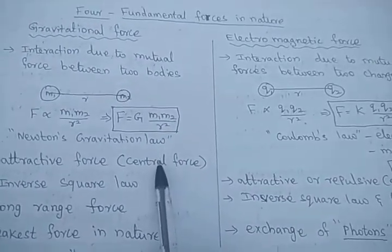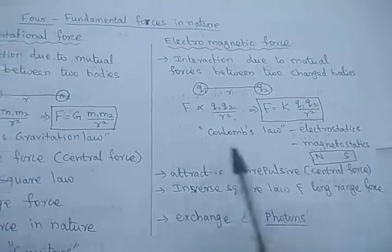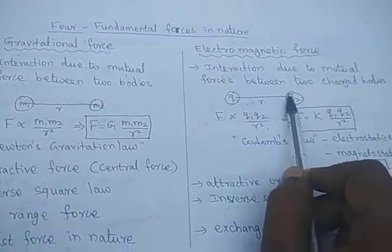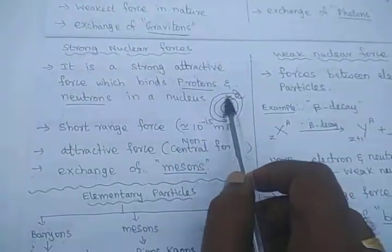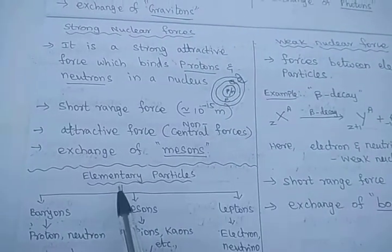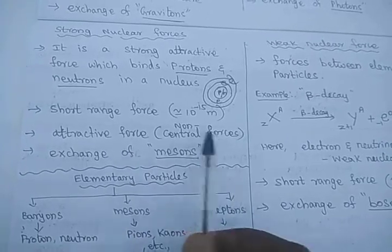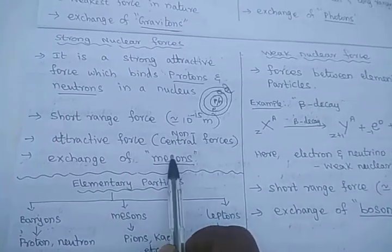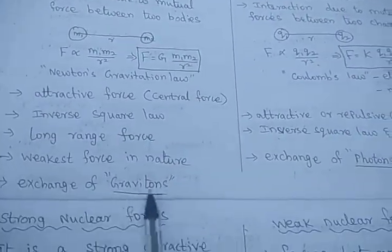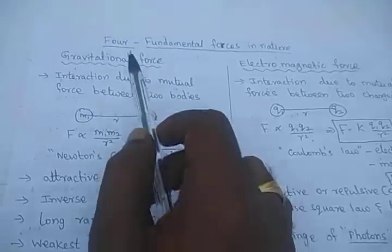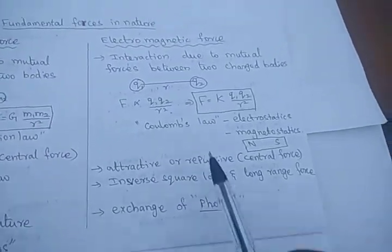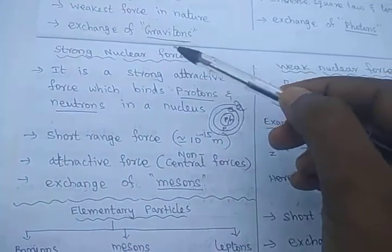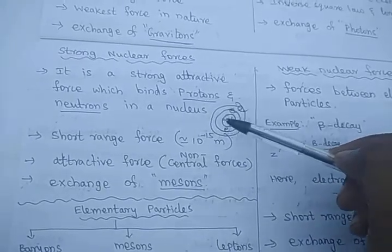Gravitational force and electromagnetic force are central forces — meaning forces acting along the line joining two bodies or two charges. But this is not true for strong nuclear force, so it is called a non-central force. Mesons are particles which travel between the proton and neutron; the exchange of mesons is responsible for the strong nuclear force. Similarly, exchange of gravitons is responsible for gravitational force, and exchange of photons is responsible for electromagnetic force.